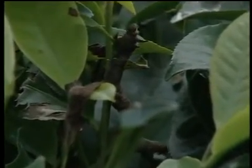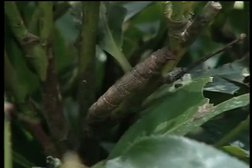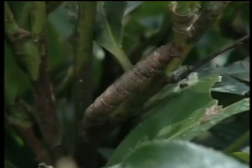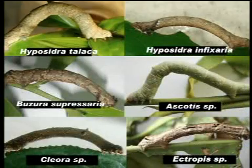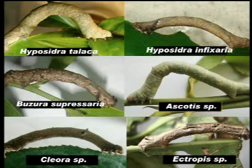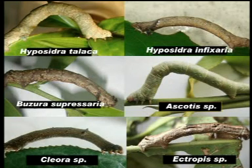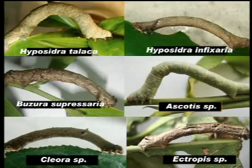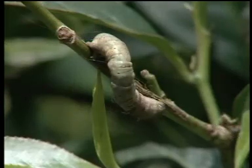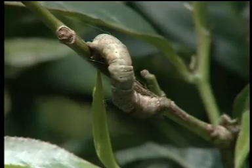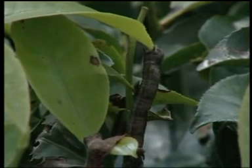The looper caterpillar is one of the most destructive defoliator pests of tea. In recent years, five different species of forest looper caterpillar have been identified: Hyposidra talaca, Hyposidra infixaria, Cleora species, Ectropis species, and Ascotis species. These five species cause extensive damage to tea and shade tree plants.